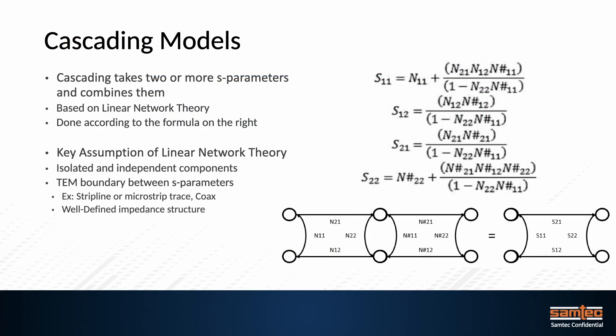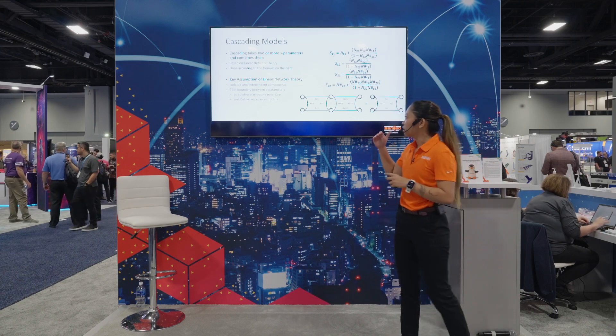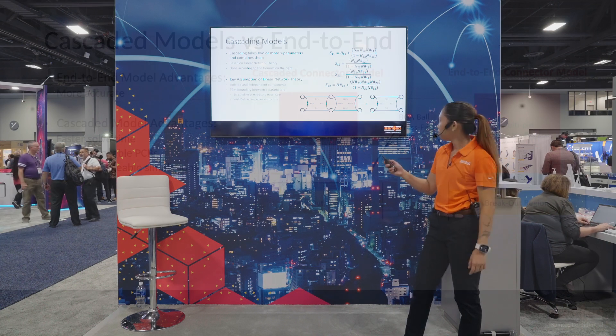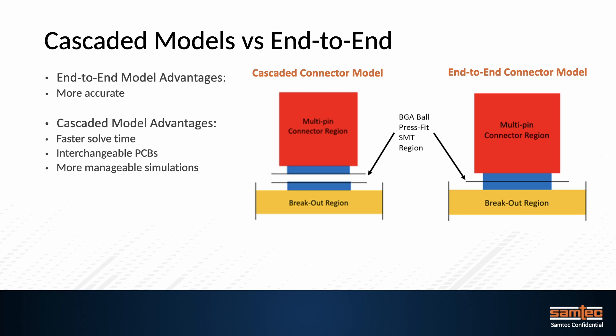Before comparing cascaded models and end-to-end models, let's look at what cascaded models are. Cascaded models essentially take two or more S-parameters and combine them together, based on linear network theory according to the formula shown. A typical assumption is that they are isolated and independent components. The boundaries between S-parameters could be stripline, microstrip, coax, and so on. With end-to-end models, because the breakout region is simulated simultaneously with the connector, we get more accurate results. For cascaded models, the advantage is faster solving time, especially for a multi-pin connector.